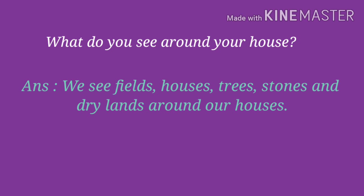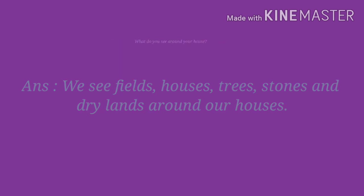Some places are very high — those are mountains. In some places we see many fields. Near the sea we see the beach and seashore. Some places have no water or plants and are dry — those we call dry land. These are the landforms.